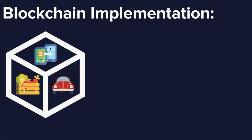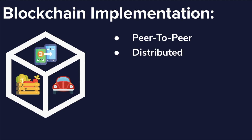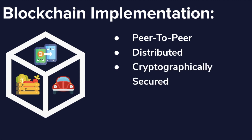Blockchain may have limitless expressions, but a few things they will all have in common are: first, they operate peer-to-peer — no central authority to control or manipulate it, and all participants talk directly with no third parties. Second, they are distributed — the ledger is spread across the whole network, making tampering difficult. Third, they are cryptographically secured — cryptography is used to make the ledger tamper-proof. And fourth, they are add-only — data can only be added in time-sequential order, making it practically impossible to change once recorded.